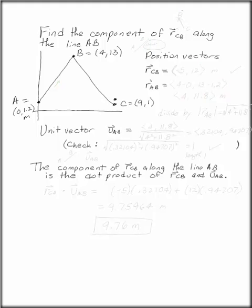We want to find the component of RCB, the position vector from C to B, along the line AB. So we have RCB goes up like this from C to B, and we want to find the component of this vector along the line AB.